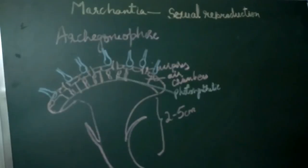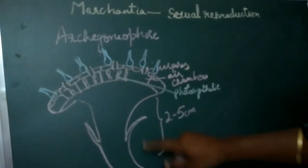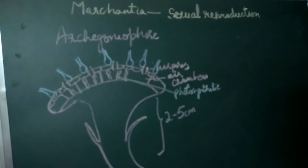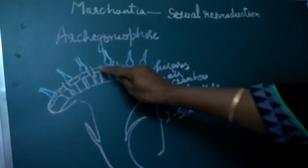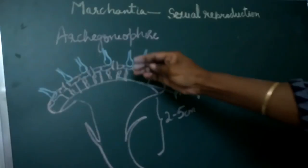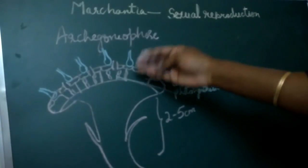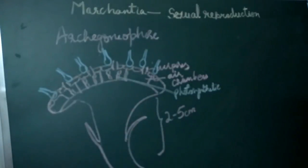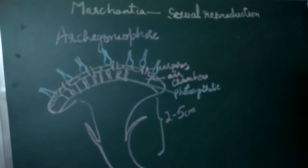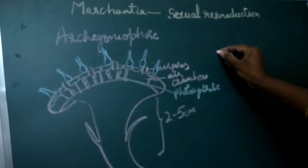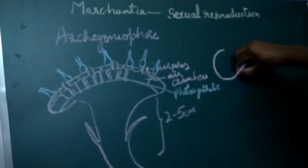After fertilization, certain changes are seen on the peltate disc. The stalk of the Archegoniophore elongates and there is a rapid increase in the number of cells on the dorsal surface of the peltate disc when compared to the ventral surface. Because of this differential growth between the upper and lower surface — or between the dorsal and the ventral surface of the Archegoniophore — the archegonia are pushed downwards.